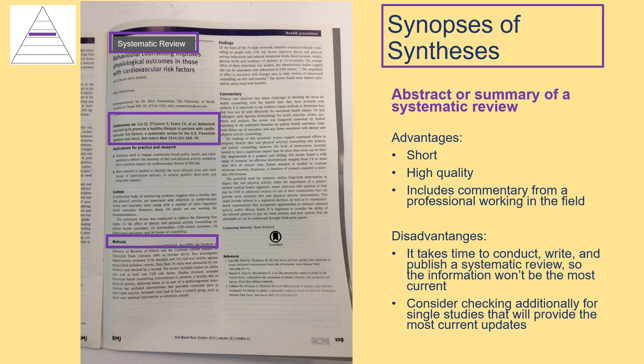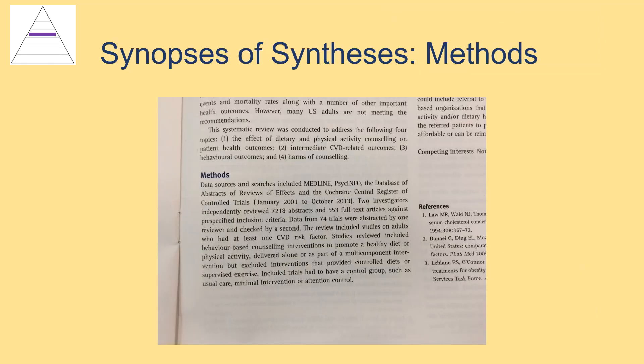We have a methods section describing how the research was conducted, and we find our commentary here as well. Here we are zooming in on the methods section from the example of a synopsis of synthesis presented on the previous slide. We can see a list of databases that were searched: Medline, PsycInfo, DARE, and Cochrane. And we can see that two investigators independently reviewed abstracts and full-text articles against the pre-specified inclusion criteria. It goes on to provide further details about the methods used, but these are indicators that secondary research was conducted, meaning that this is a synopsis of synthesis.